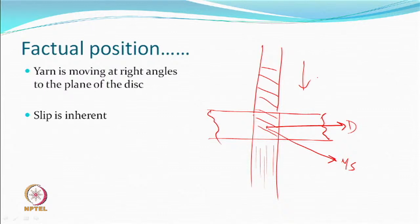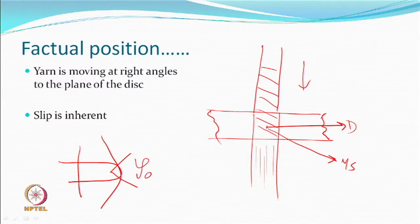The disc is moving like this and the yarn is coming vertically like this. Instead of coming straight across because that would mean zero wrap angle, which obviously is not going to give you any twisting, what you are doing is wrapping it. But if you look at the plane of motion of the yarn and the plane of motion of the disc, they are at right angles.